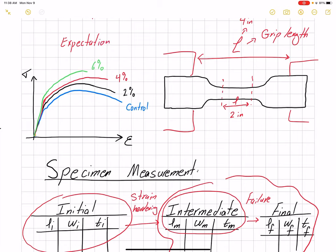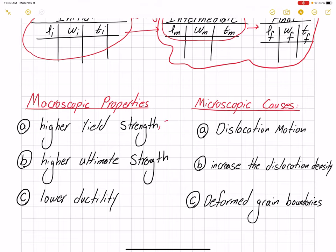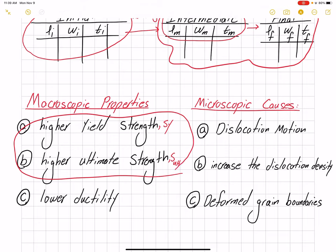Looking at the stress-strain curve, we are expecting to see such a trend — though in reality things can go wrong. As we move from two percent to four percent to six percent strain, we are expecting our yield strength to increase and our ultimate strength to increase as well, but the elongation or strain to failure is expected to decrease. So in terms of macroscopic behavior, strain hardening gives higher yield strength and higher ultimate strength but lower ductility — always a trade-off.